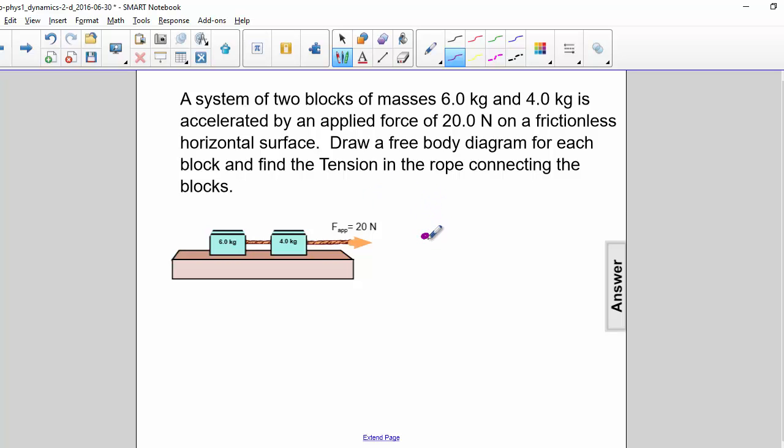So for the 6 kg block we have Mg down, I'll make that M1g, a normal force up and force of tension to the right.